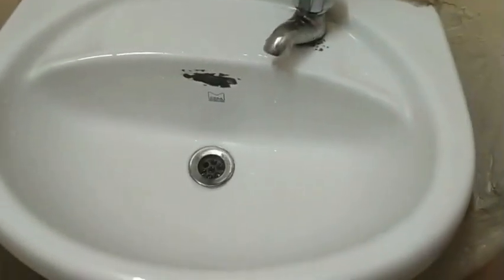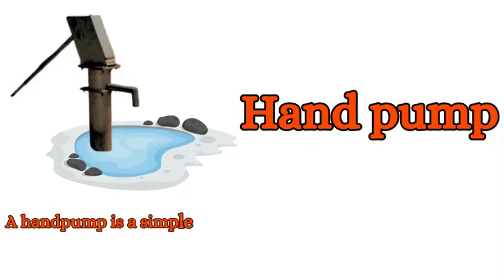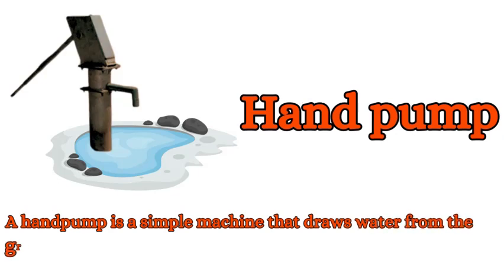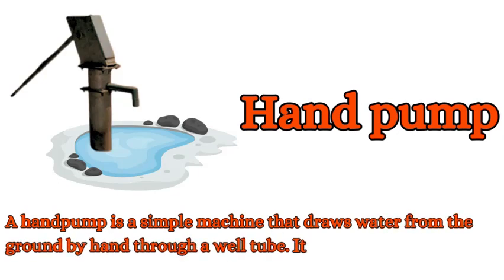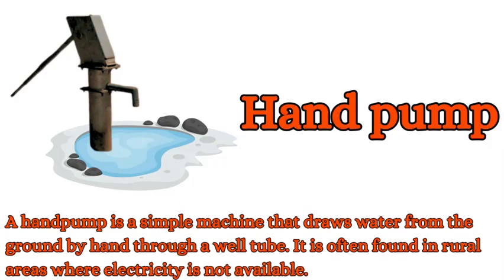Hand Pump: a hand pump is a simple machine that draws water from the ground by hand through a well tube. It is often found in rural areas where electricity is not available.